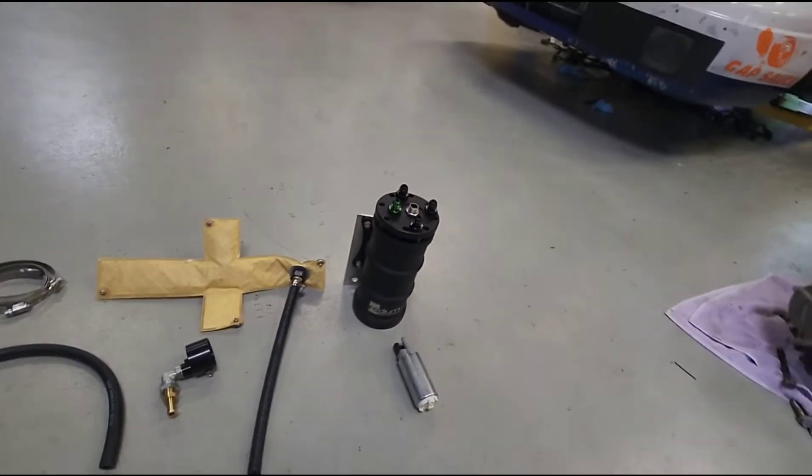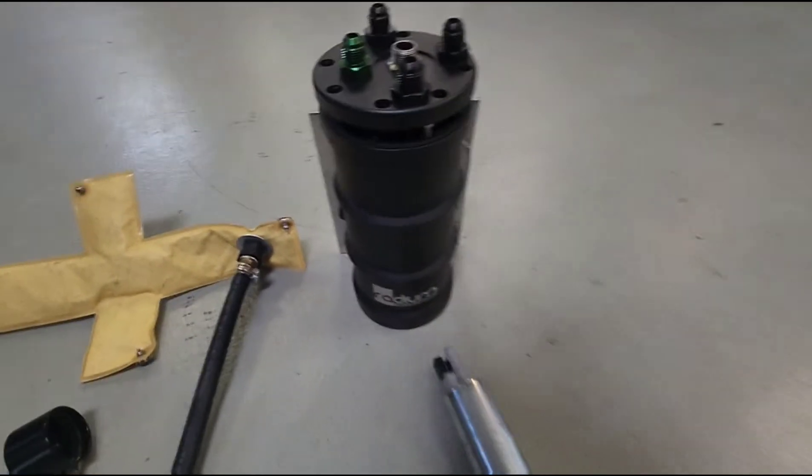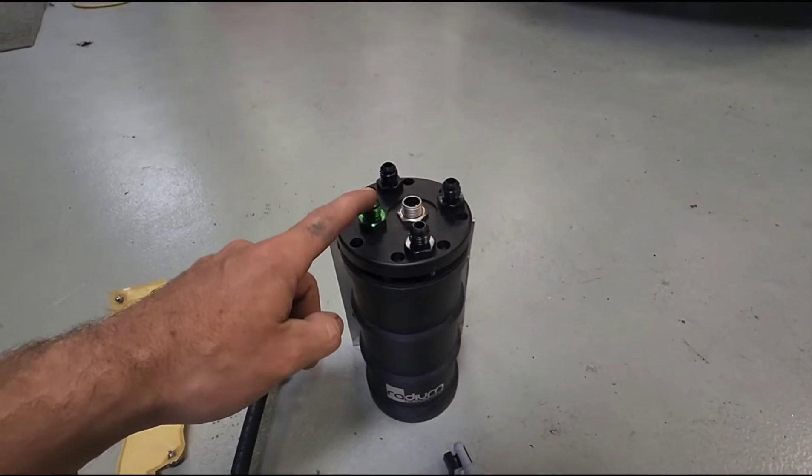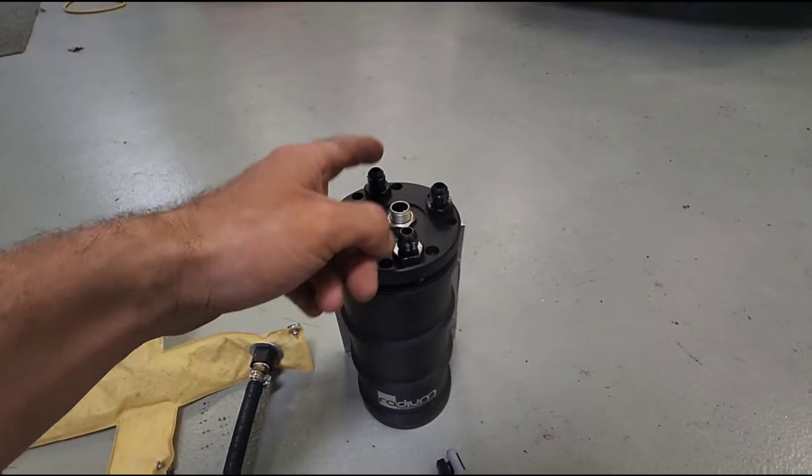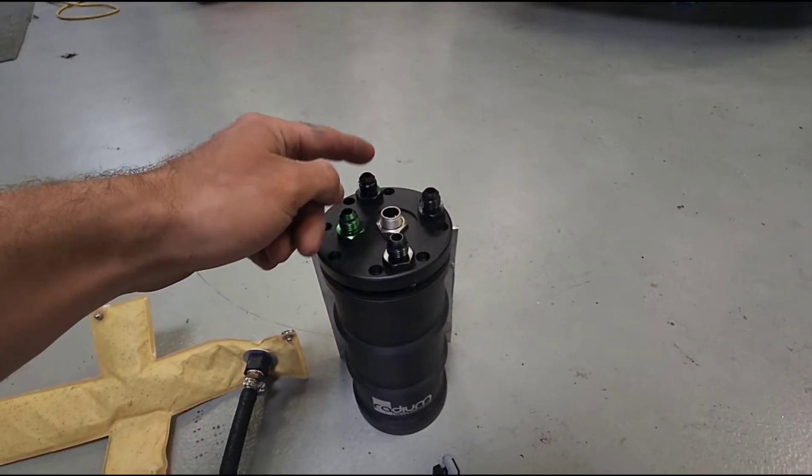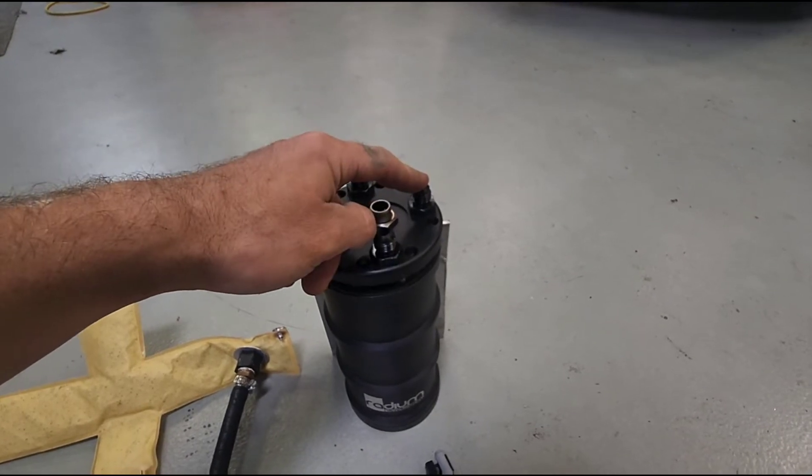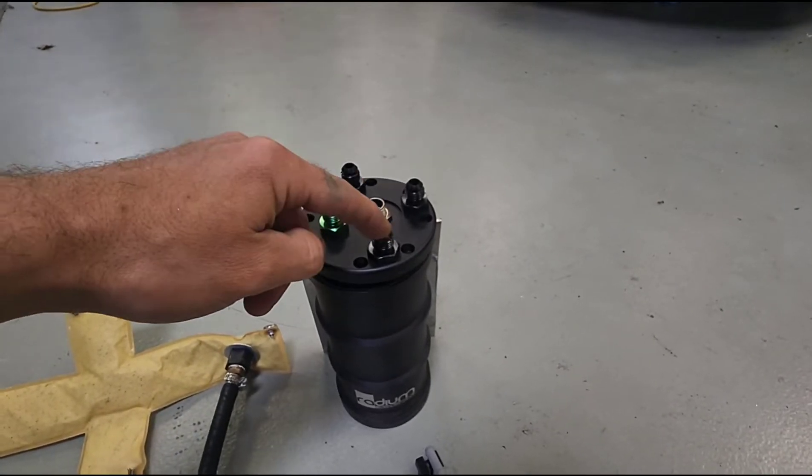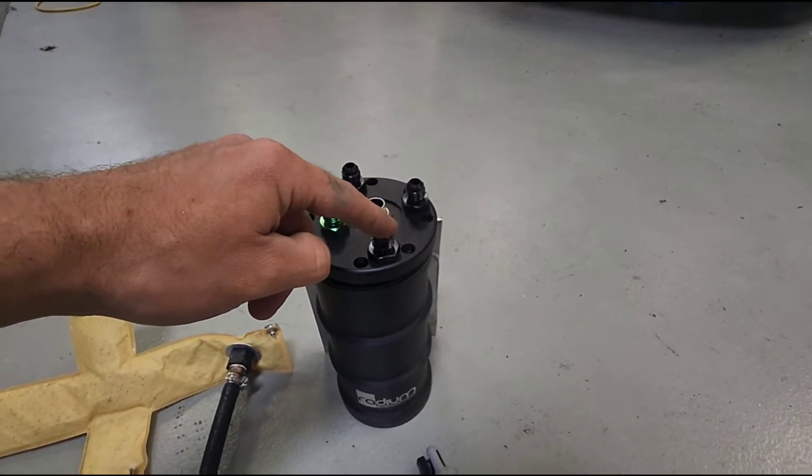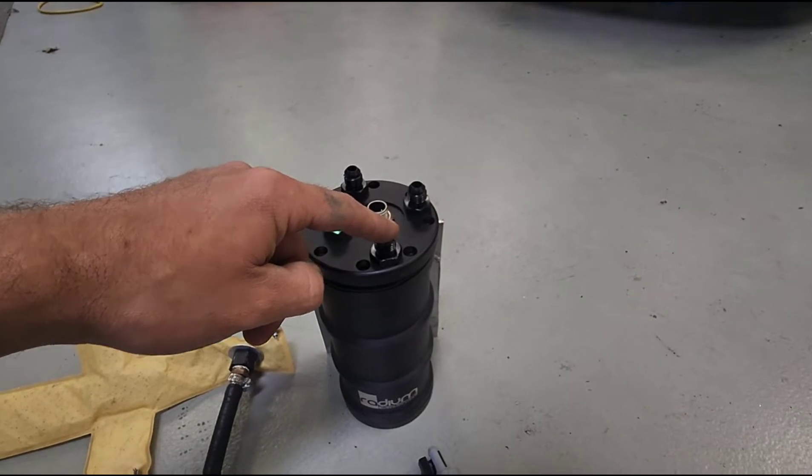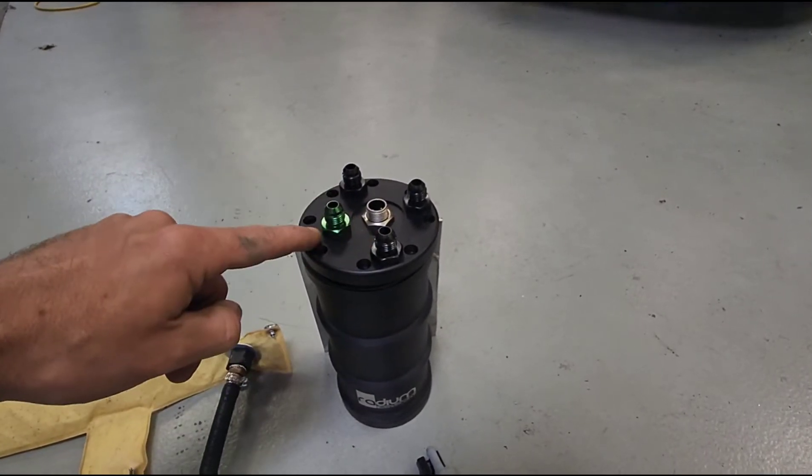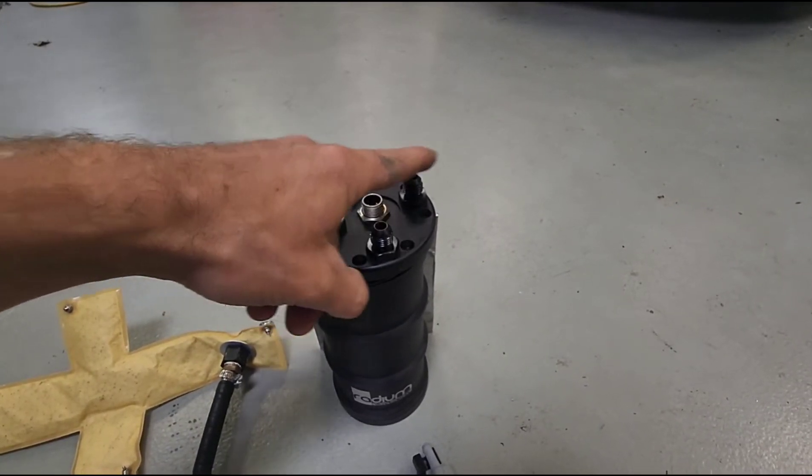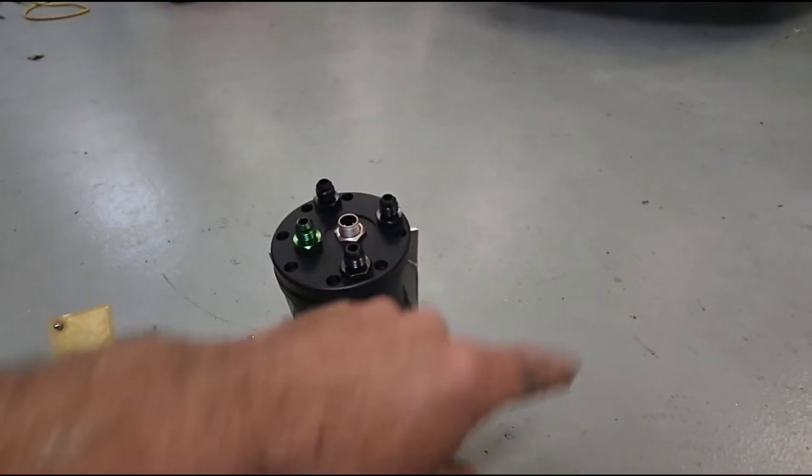We'll start with the Radium Engineering Surge Tank. I had this installed on my car, just your typical surge tank. You've got your one out feed, then you have your return from your engine, and this is a return to your stock tank. One of them will be your feed from your stock fuel tank. So the stock fuel tank dumps it into here, then the pump in here sends it to the motor. It returns back to here, and then anything extra comes out of here and returns back to the stock tank.